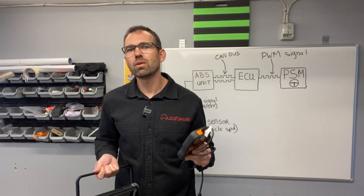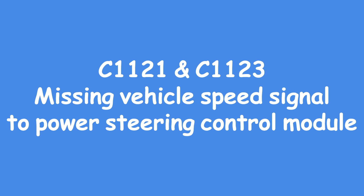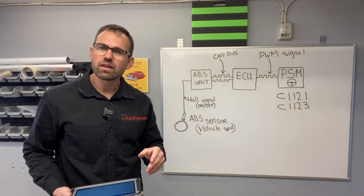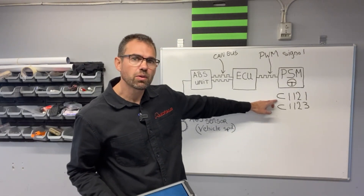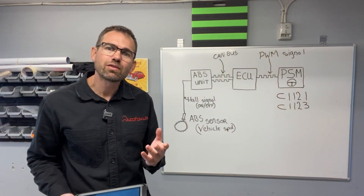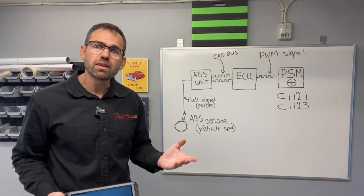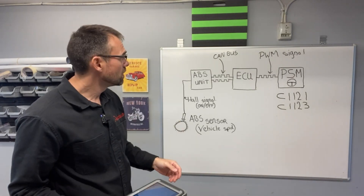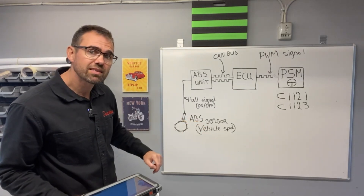This very first episode is about wheel speed sensors, or ABS sensors. I have a car here which is throwing error codes 1121 and 1123, which are related to a missing vehicle speed signal to the power steering control module. Basically it says: something's wrong here, I don't know how fast the car is driving, so I'm not able to give you the correct assistance with your power steering. The vehicle speed signal in a car comes from an ABS sensor.